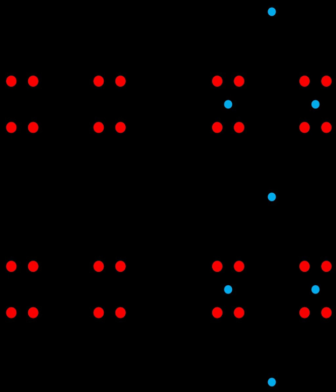A partially ordered set consists of a set of elements together with a binary relation x ≤ y on pairs of elements that is reflexive, transitive, and antisymmetric. The usual numeric orderings on the integers or real numbers satisfy these properties; however, unlike the orderings on the numbers, a partial order may have two elements that are incomparable — neither x ≤ y nor y ≤ x holds. Another familiar example of a partial ordering is the inclusion ordering on pairs of sets.